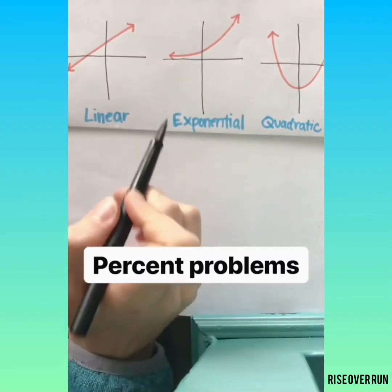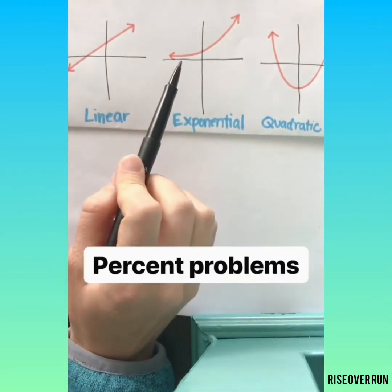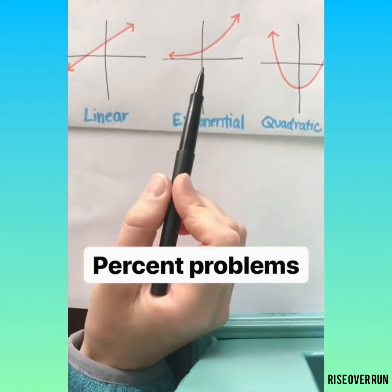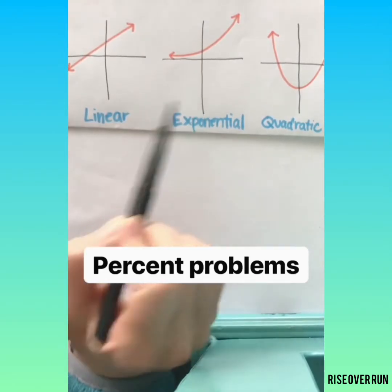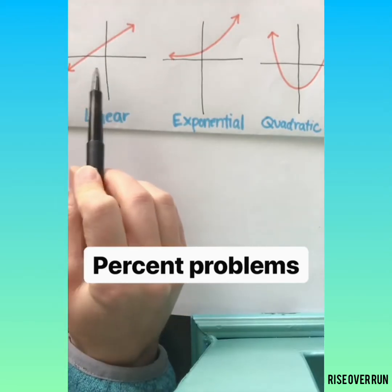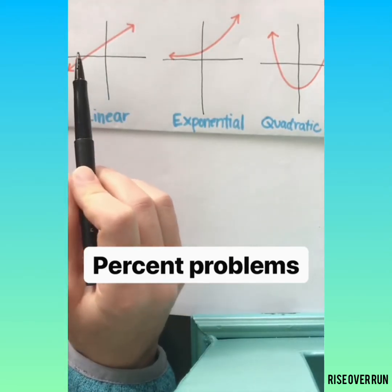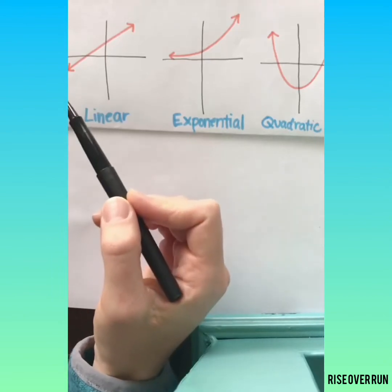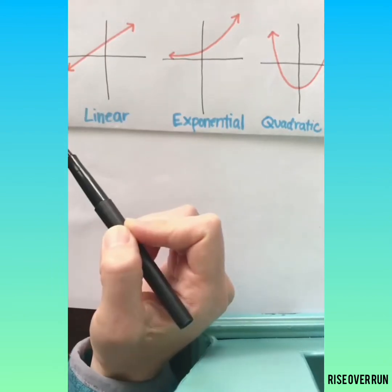Be careful with percent problems. If it's a percent growth or decay, talking about money growing or maybe a population, that's usually exponential. If you're just talking about percent of a number to find a discount or a markup and it's the same percent, then that might just be a linear relationship.